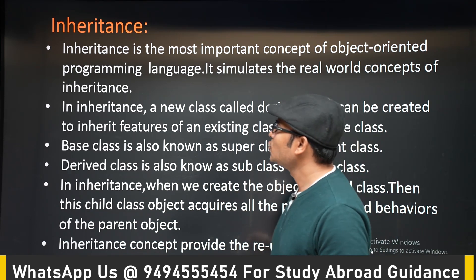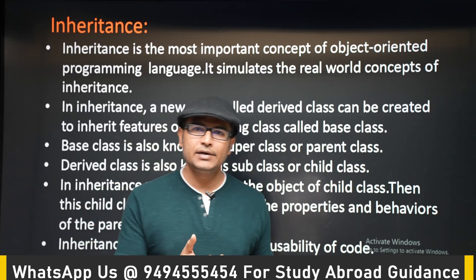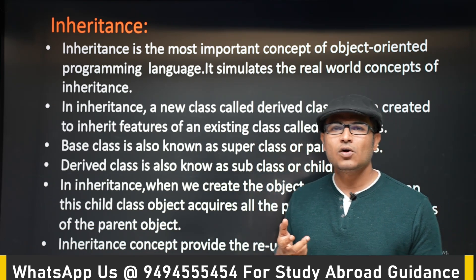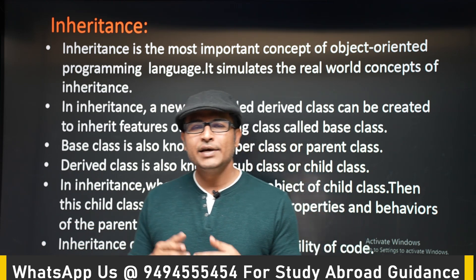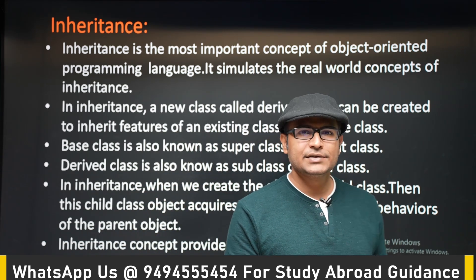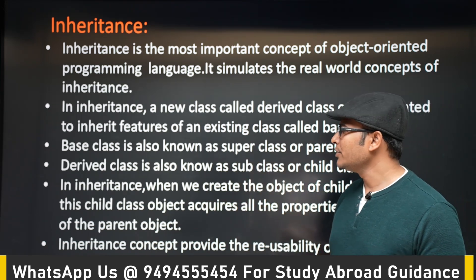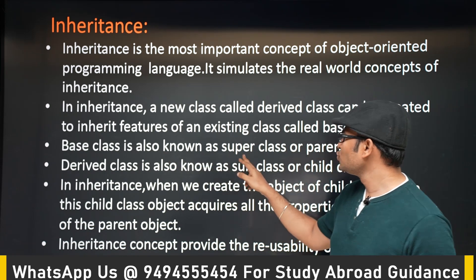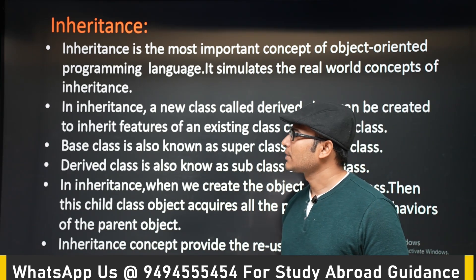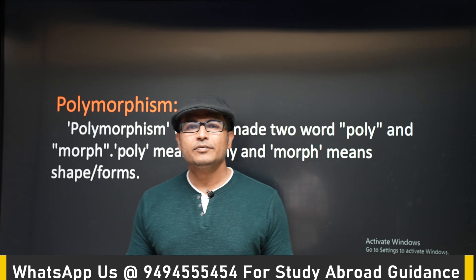In inheritance, there is a base class already defined, and we can inherit it in a derived class. Sometimes they are called super class and subclass. A subclass can get the properties of the super class — this is called inheritance. A base class is also known as super class or parent class, and a derived class is also known as subclass or child class.